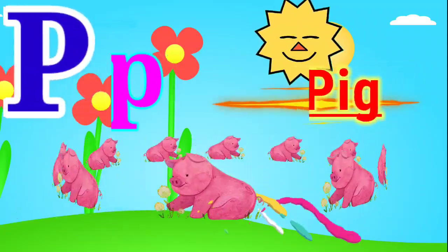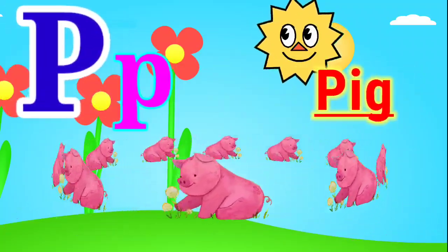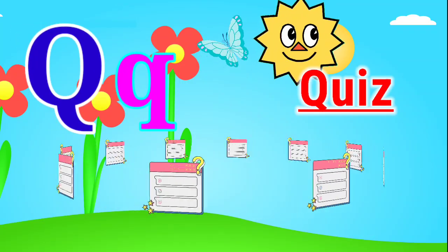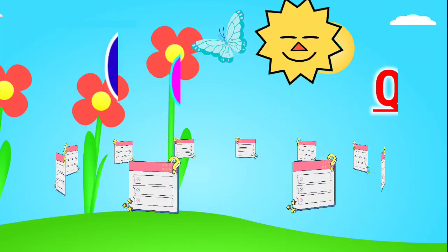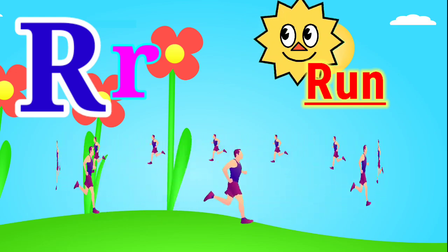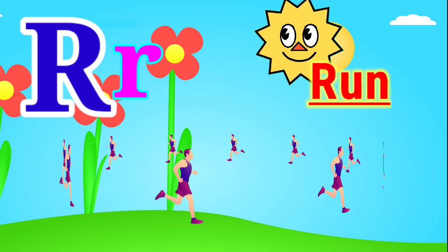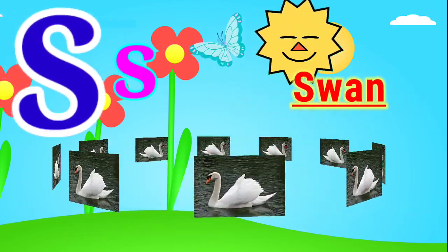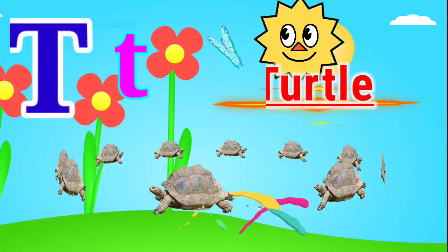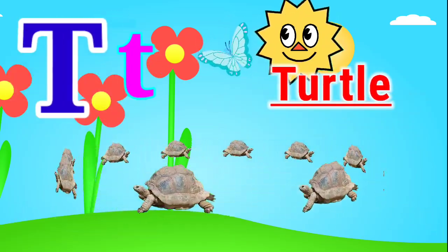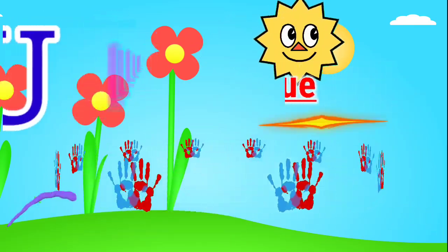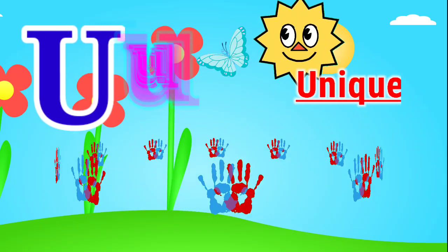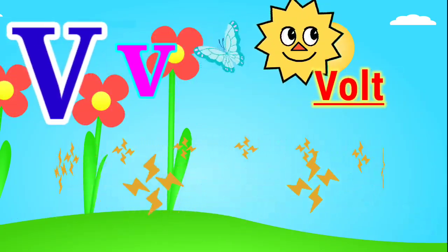P for pig. Q for quiz. R for run. S for sun. T for turtle. U for unique. V for violin.